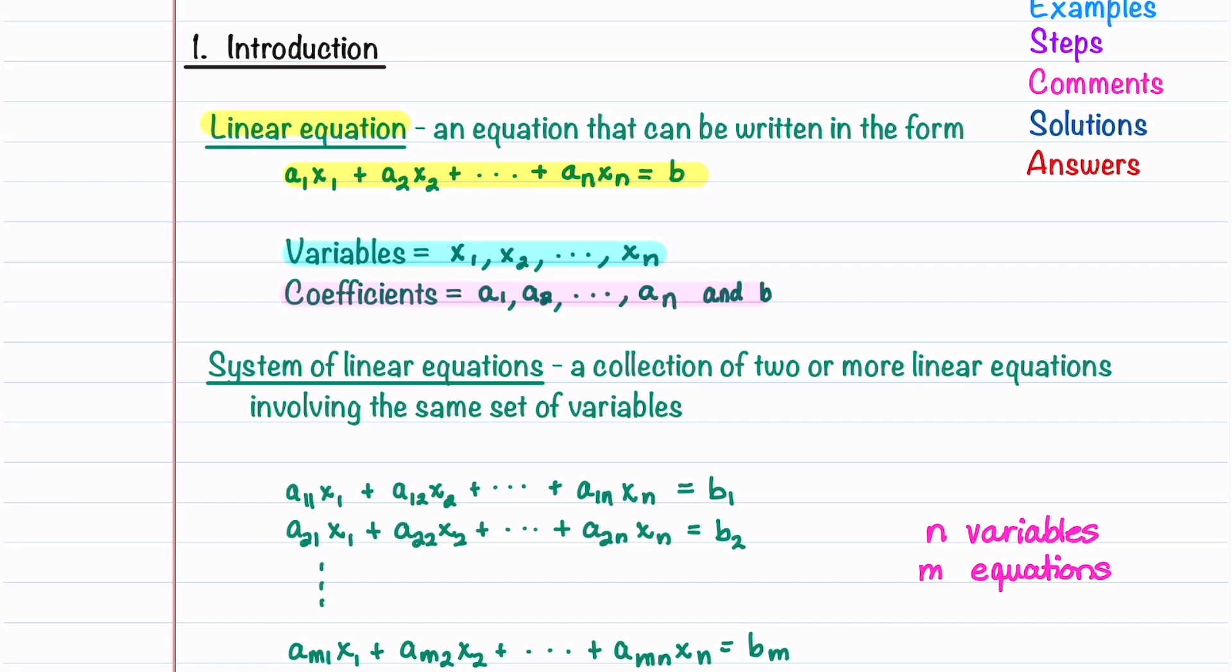Now let's look at a set of more than one linear equation. This set is called a system of linear equations, and it's a collection of two or more linear equations involving the same set of variables.